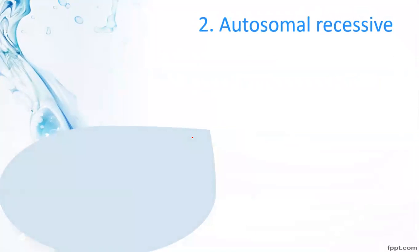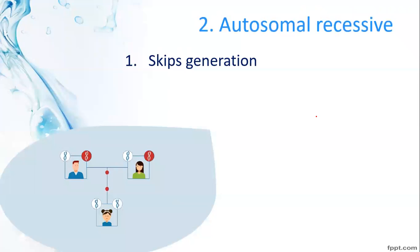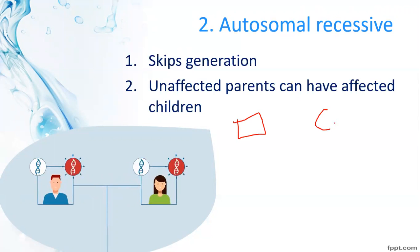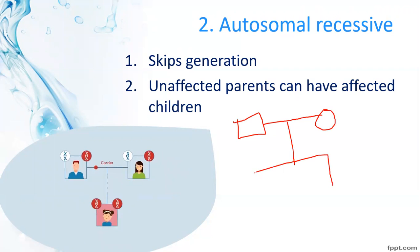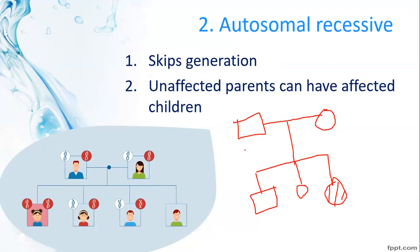Next one is autosomal recessive. The first trick is that autosomal recessive traits skip generations — the trait appears in one generation, skips, and then reappears in a later generation. The second rule is that unaffected parents can also produce affected children, because it is a recessive character.